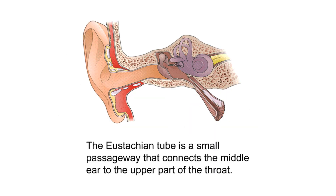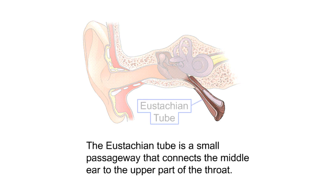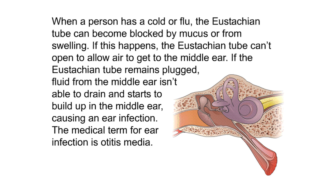The Eustachian tube is a small passageway that connects the middle ear to the upper part of the throat. When a person has a cold or flu, the Eustachian tube can become blocked by mucus or from swelling. If this happens, the tube cannot open to allow air to get to the middle ear. If it remains plugged, fluid from the middle ear cannot drain and starts to build up, causing an ear infection — the medical term is otitis media.